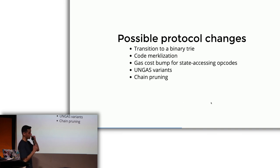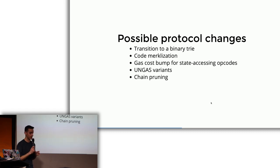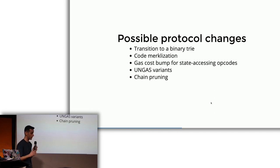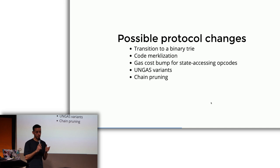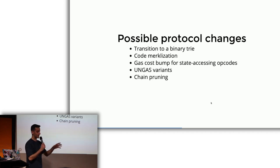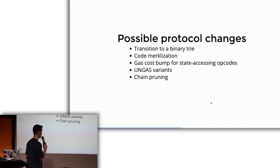The next step is to do code merklization. I will talk about this in more detail at ECC, so if you're curious, check it out. The gist of code merklization is that for one transaction, you don't need the whole contract code. If you want to transact with MakerDAO, you don't need the whole thing — you just need one function, for example. So here we break contract code into chunks, make a tree out of it, and then for every transaction we only send the parts necessary for executing it. As I show in the data, this also reduces the block witness size by quite a bit.